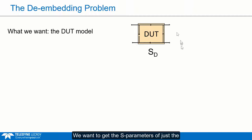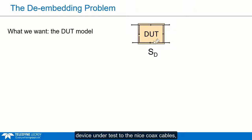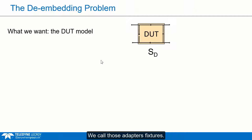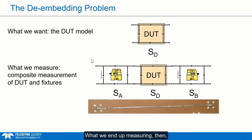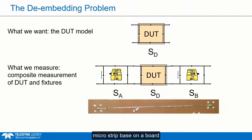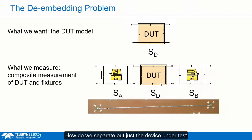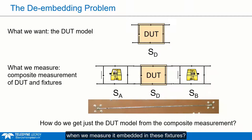Here's the challenge. We want to get the S-parameters of just the device under test that we care about. Unfortunately, in order to connect that device under test to the coax cables of the WavePulsar 40IX, we need an adapter — we call those adapters fixtures. We need a fixture that connects between the coaxial connector and whatever that device under test is, for example a trace on a circuit board, and of course a fixture on the other side. What we end up measuring is this composite structure — it has the fixtures on the ends and the device embedded in the middle. The challenge is we don't want all those fixtures in the way; we want just the device under test.